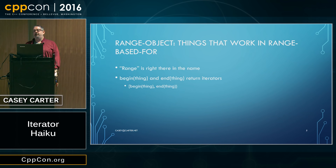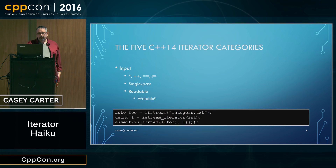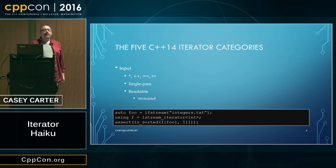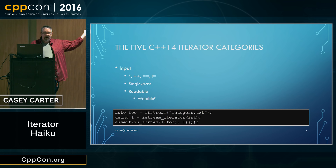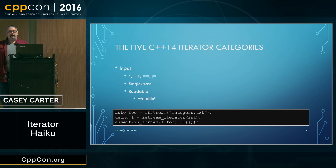I said ranges are denoted by iterators, so we have to at least briefly talk about what iterators are. There are five different categories of iterators in standard C++. The first one I'm going to talk about is input. Input iterators have several different operations. You can take star of an input iterator to read its value — dereference it as if it was a pointer. Plus-plus advances the input iterator to the next element in the sequence.